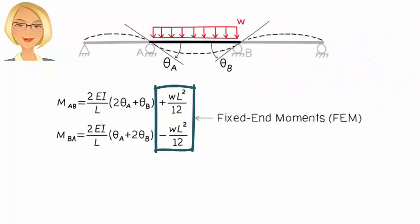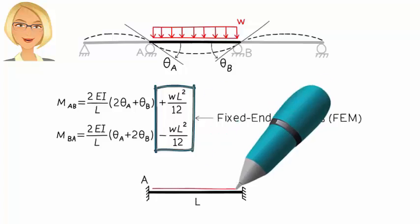They represent the effect of the applied load on the relationship between the member-end moments and rotations, so we need to have them in order to accurately model the behavior of a beam segment under loads. Fixed-end moments also happen to represent the support reactions of a beam that is fixed at both ends.